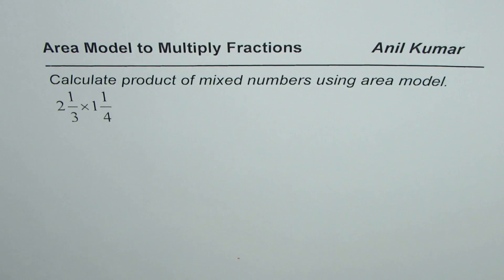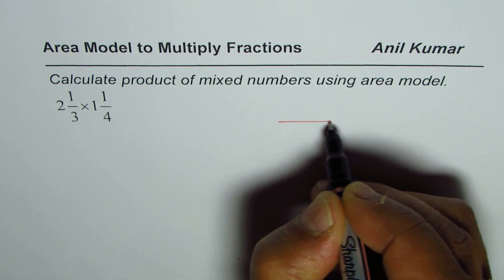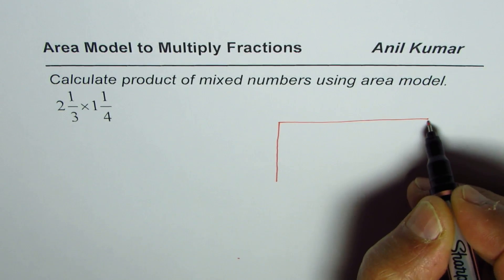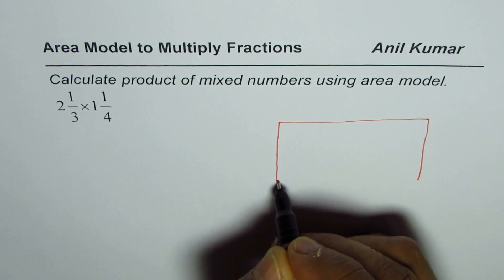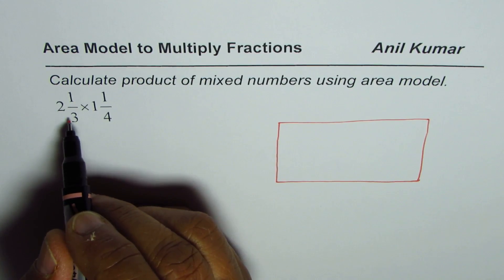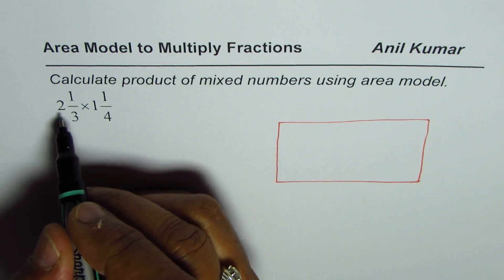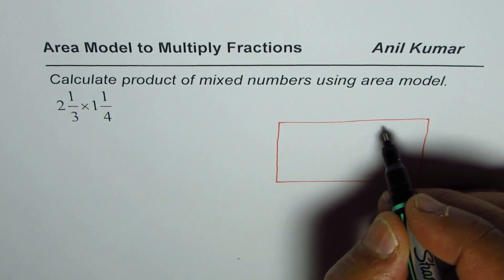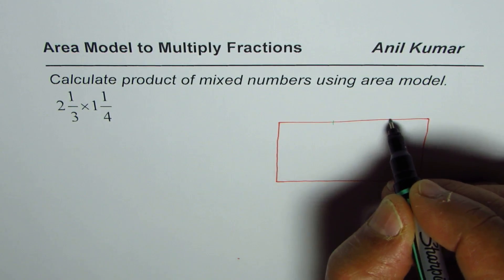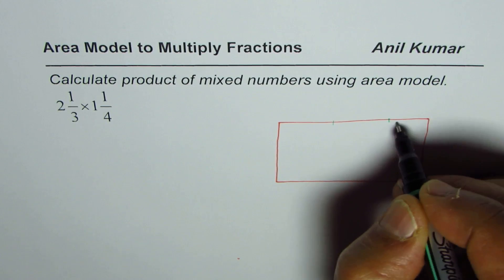We'll make a rectangle and divide it into parts to represent the mixed numbers. For 2 1/3, this section represents 1, this is 2, and that portion is 1/3.